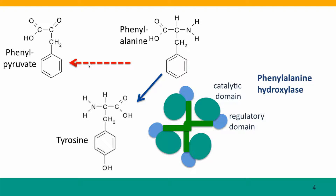But if too much phenylalanine accumulates in the cell, phenylalanine will instead be converted to the toxic molecule phenylpyruvate. In infants that have a mutation blocking the activity of phenylalanine hydroxylase, we get the disease phenylketonuria, caused by the toxicity of this product. But even normal cells have ways to make sure that phenylalanine levels never get too high, and that's the function of the regulatory domain of the enzyme.